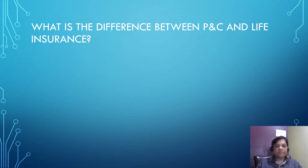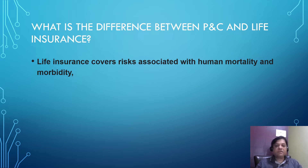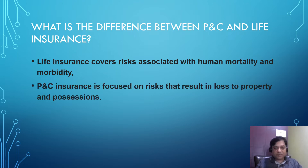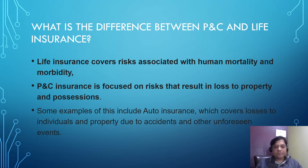What is the difference between P&C and life insurance? Life insurance covers risks associated with human mortality and morbidity, whereas P&C insurance is focused on risks that result in loss to property and possessions. Some examples of this include auto insurance, which covers losses to individuals and property due to accidents and other unforeseen events.